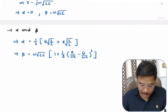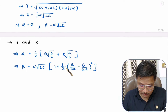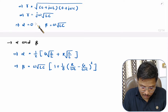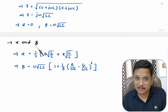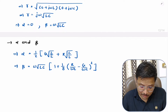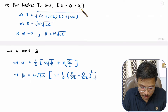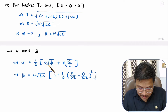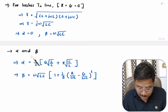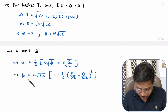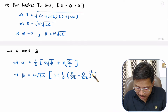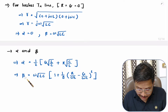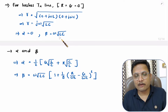Let me explain one more thing. If you want to verify the alpha and beta equations, you can do so by considering a lossless transmission line where R and G are zero. For alpha: substituting R = 0 and G = 0 gives (0 + 0) × ½ = 0, confirming alpha = 0. For beta: substituting R = 0 and G = 0 makes the bracketed term become 1, giving β = ω√(LC). That is how you can directly verify these two equations.